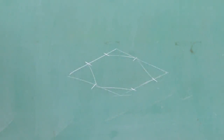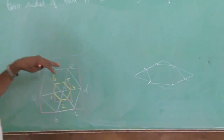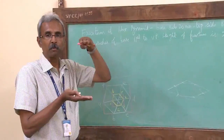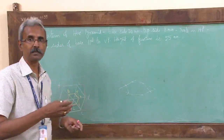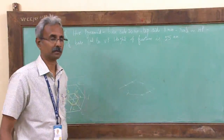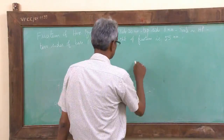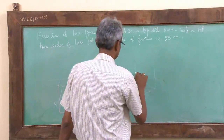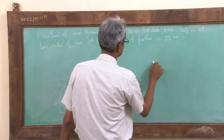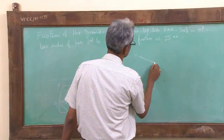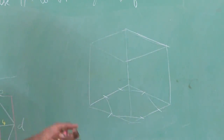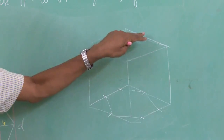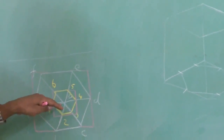As established in the last session, when drawing an isometric view of a solid, we assume it is totally enclosed in a box. Similarly, this frustum is also enclosed in a box. The height of the box will be 55 mm, which is the height of the frustum. From all four corners, erect vertical lines equal to 55 mm. The frustum is now enclosed within this box, and the top surface will show the smaller hexagon.